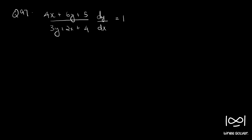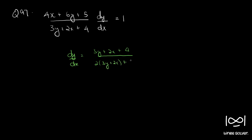Question number 97. The equation is: 4x plus 6y plus 5, divided by 3y plus 2x plus 4, times dy/dx equals 1. Rearranging, we get dy/dx equals 3y plus 2x plus 4, and we can write 4x plus 6y plus 5 as 2 times (2x plus 3y) plus 5.